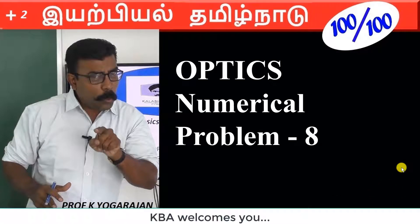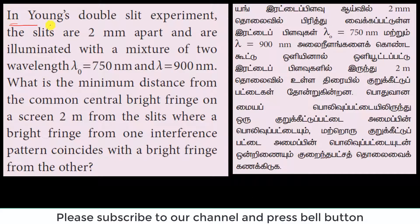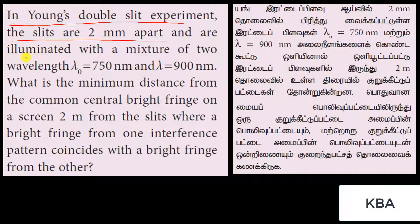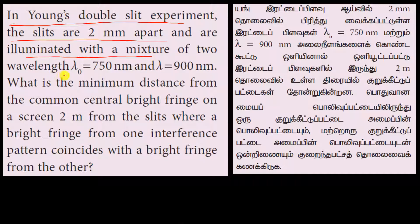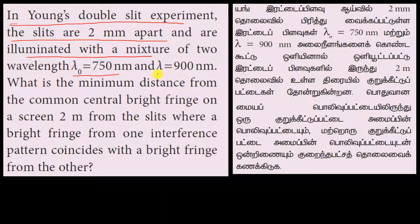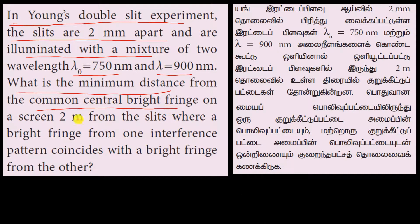This is a fantastic problem. In Young's double slit experiment, the slits are 2 mm apart and are illuminated with a mixture of two wavelengths: lambda one is equal to 750 nm, and lambda two is equal to 900 nm. What is the minimum distance from the common central bright fringe on a screen 2 m from the slits where a bright fringe from one interference pattern coincides with the bright fringe from the other?